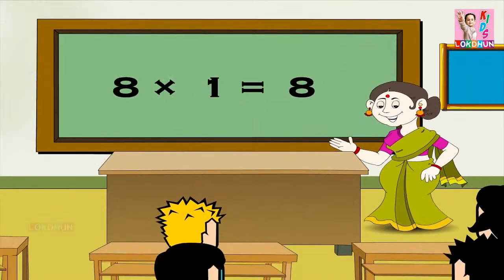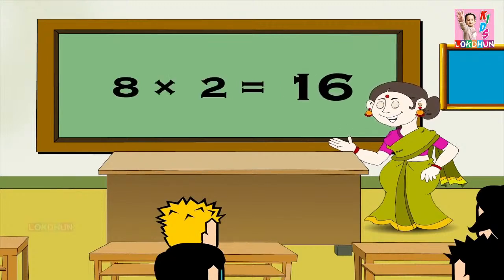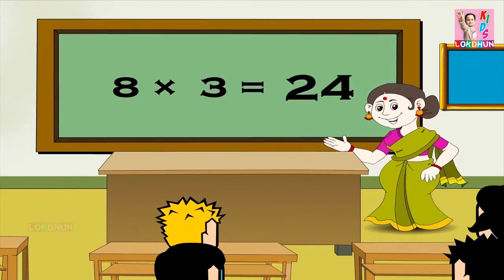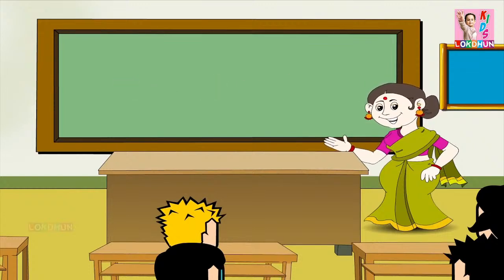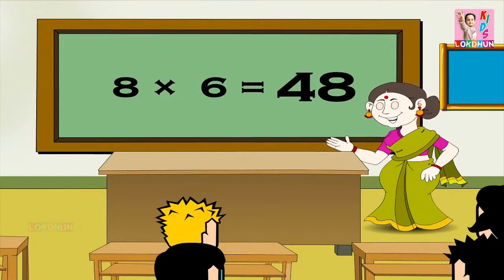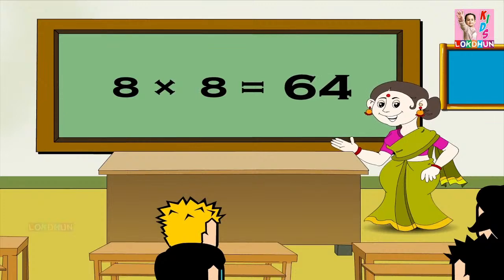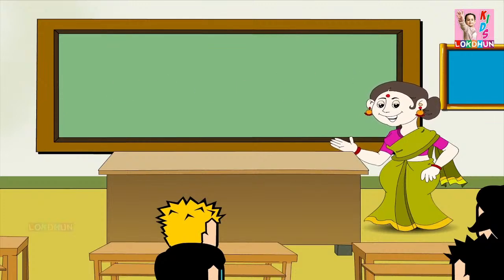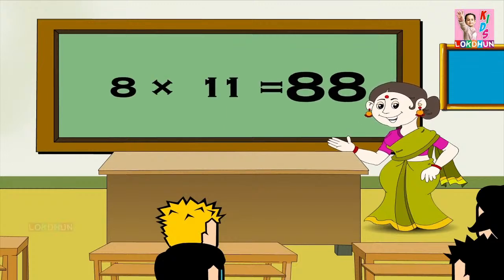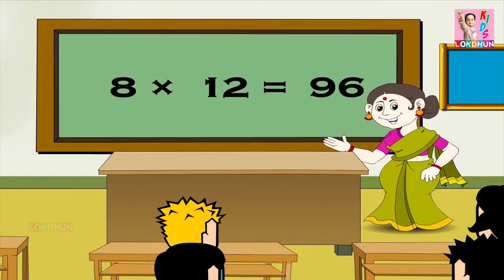8 1s are 8, 8 2s are 16, 8 3s are 24, 8 4s are 32, 8 5s are 40, 8 6s are 48, 8 7s are 56, 8 8s are 64, 8 9s are 72, 8 10s are 80, 8 11s are 88, and 8 12s are 96.